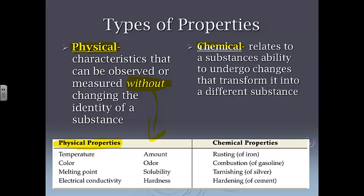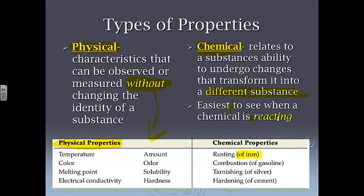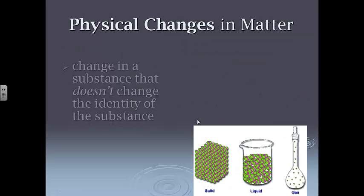As opposed to chemical properties that do relate to a substance's ability to undergo changes that transform it into a different substance. So that means that I do have to change it into something different in order to observe it. For example, will something rust? Will iron rust? Well, I have to see it rust, which is going to turn it into iron oxide in order for it to happen. Combustion's a fancy word for burning. So will it actually burn? I've got to observe it. I've got to turn it into something different. Will silver tarnish? Which is kind of just another form of rusting. And will cement harden? So those are all examples of chemical properties where I do have to physically turn something into a new substance in order to observe it. And again, this is easiest to see when the chemical is reacting, because it's either happening or it's not, and that allows us to decide what the changes are.